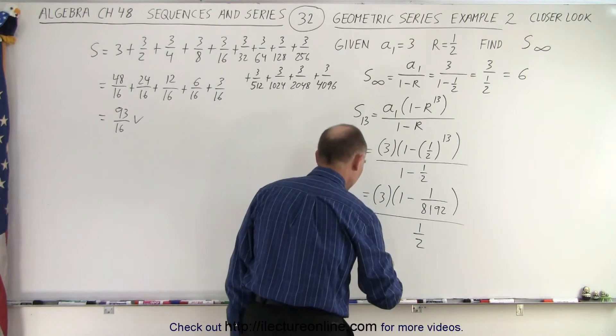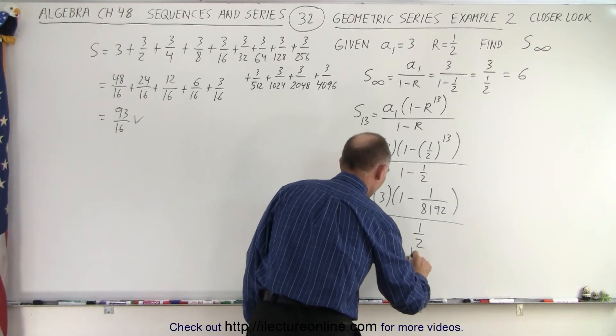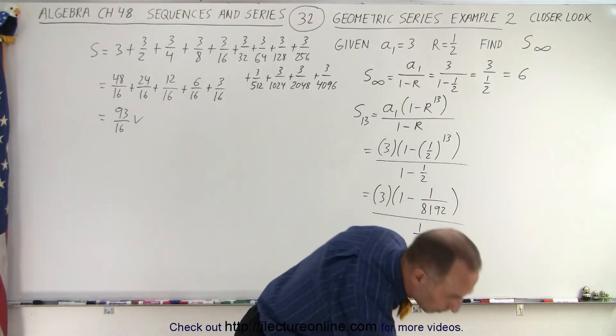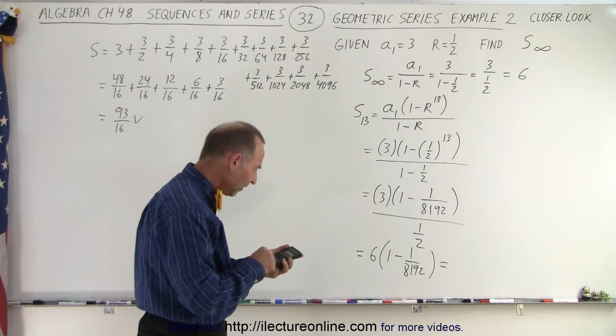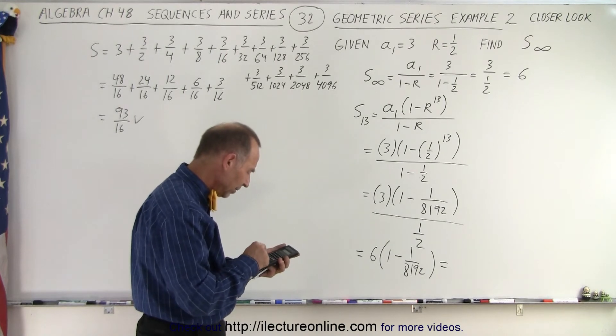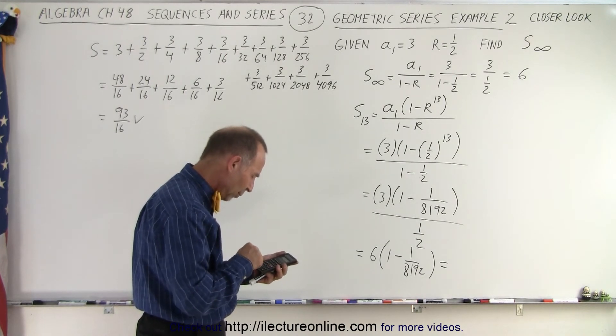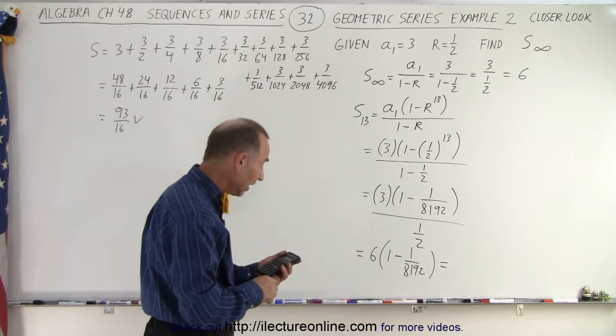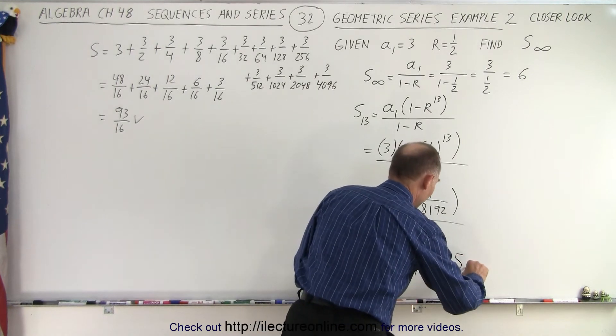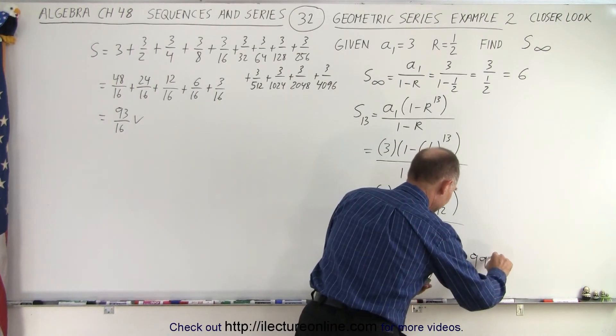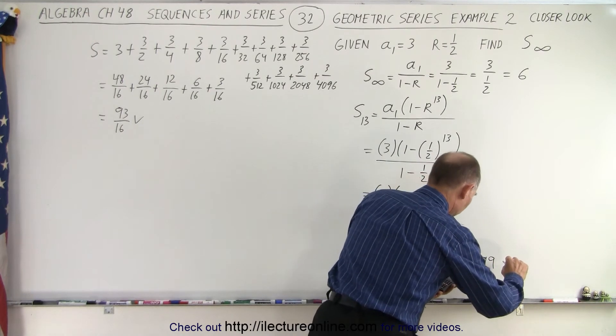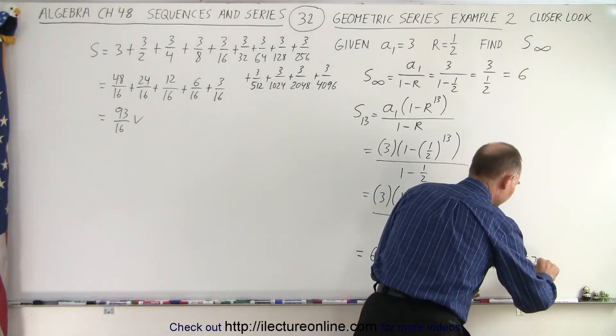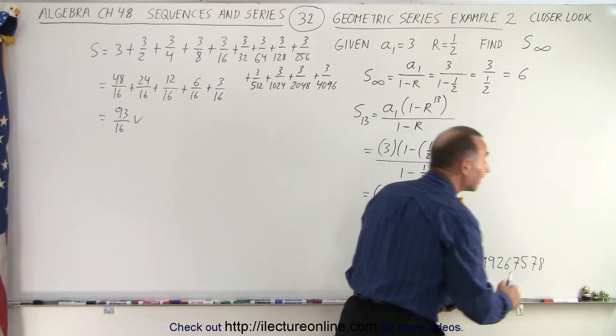Or this is equal to 6 times 1 minus 1 over 8,192. And let's see what that is equal to. So 1 divided by 8,192. Subtract that from 1 and multiply that times 6 equals... And the number we get is 5.999267578. That's out to 2, 4, 6, 8, 9 decimal places.